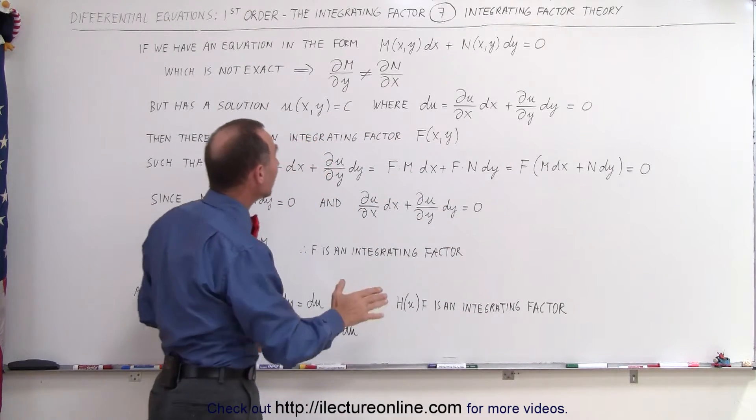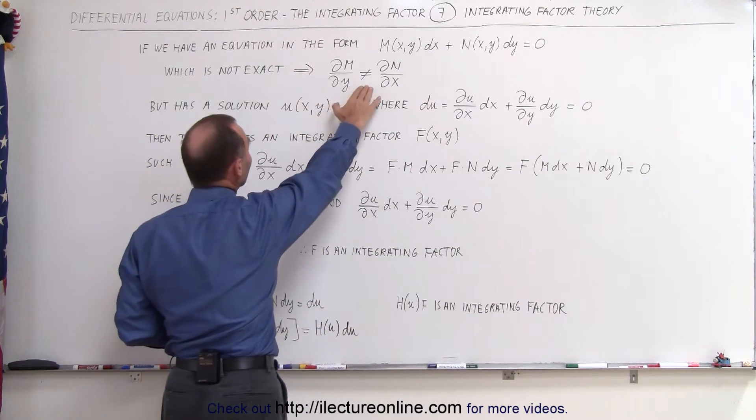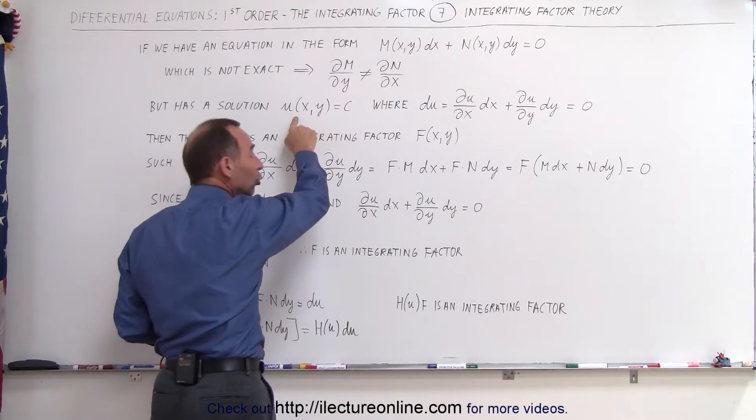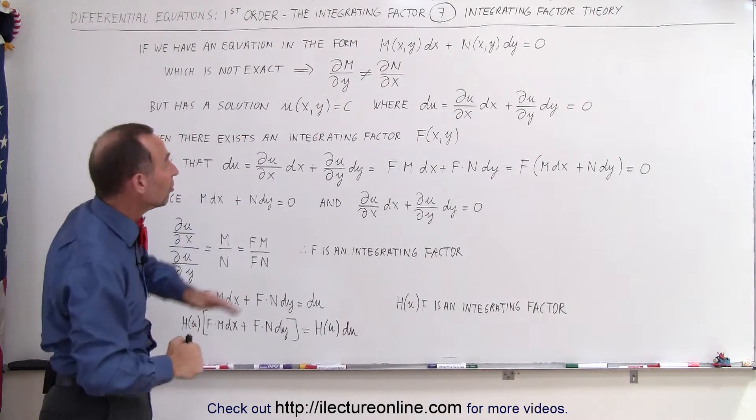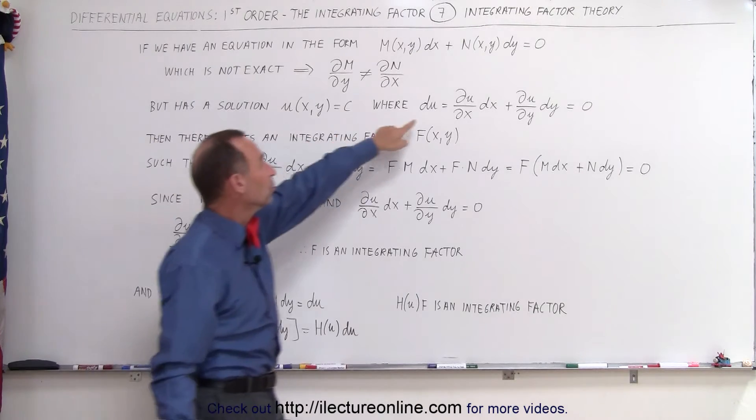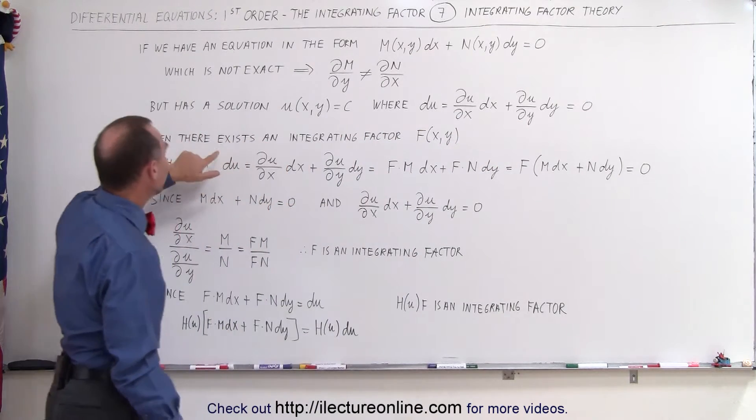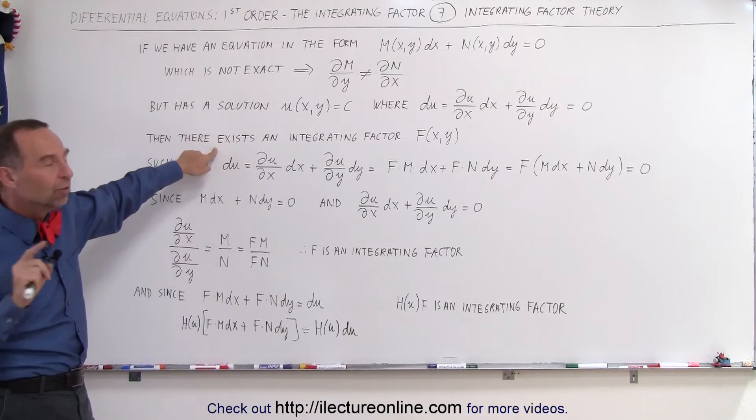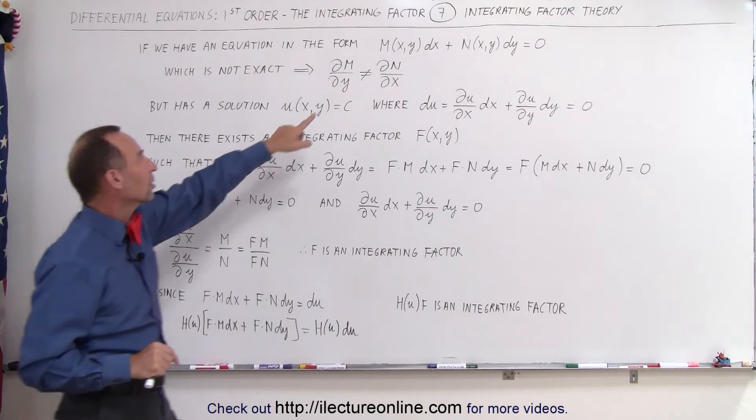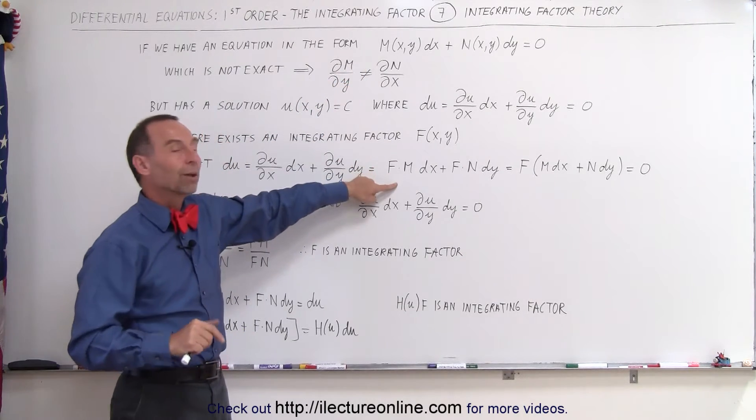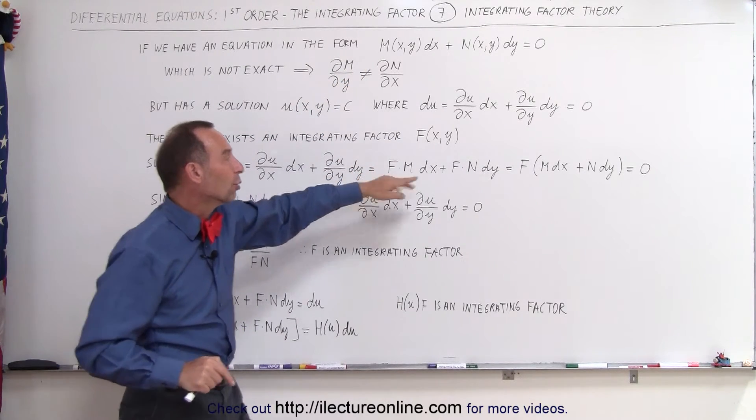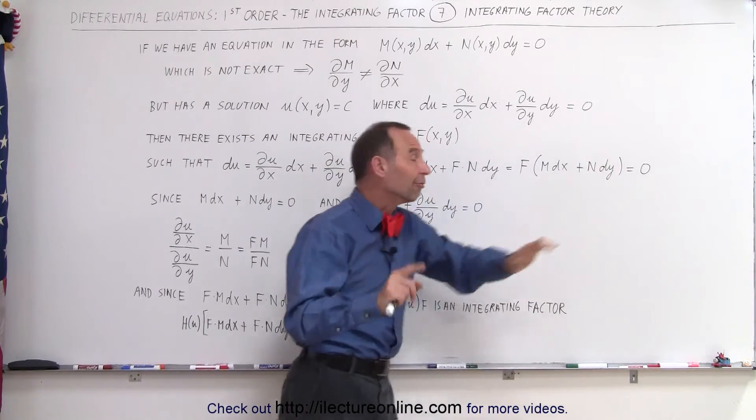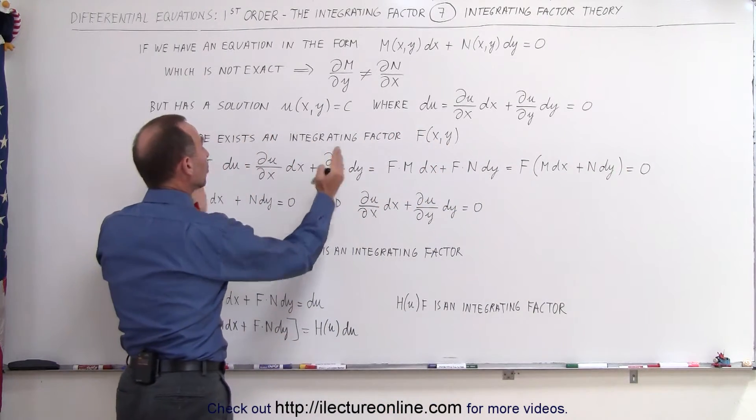So what we're saying is if the equation is not exact but it has a solution, the solution does exist in this format so that du is equal to 0. And we can then say that there must be an integrating factor such that if we take the original equation and multiply it times the integrating factor, which should still get 0, and therefore it should still equal the original du.